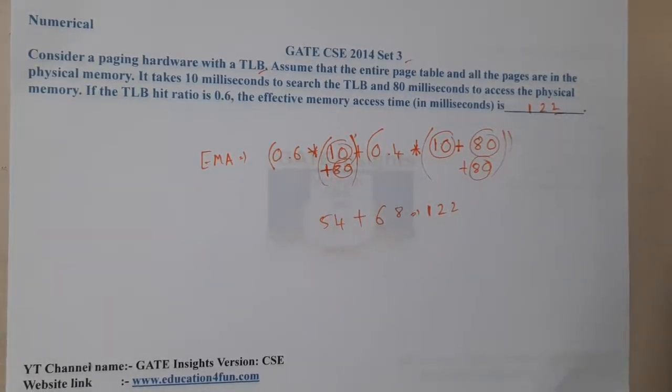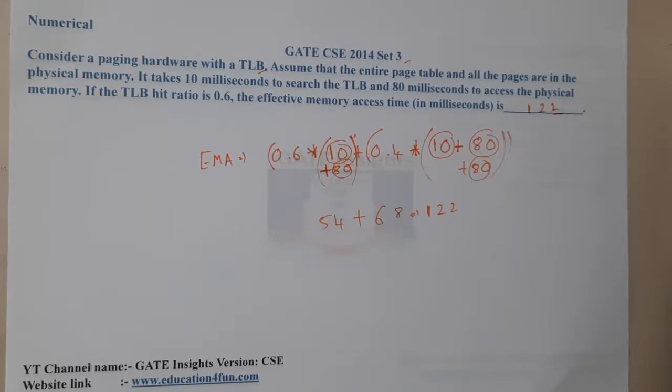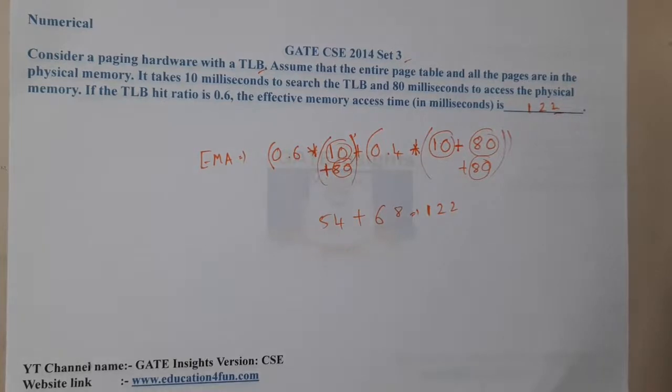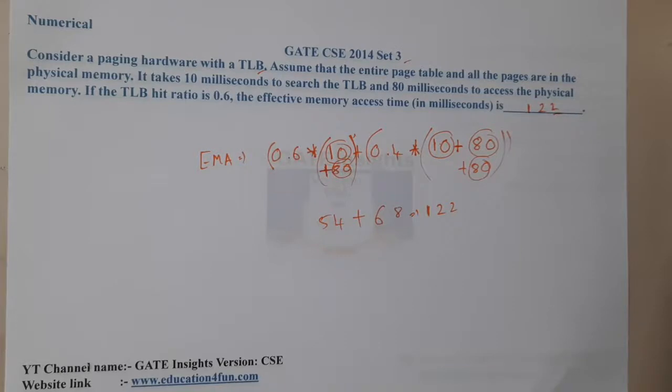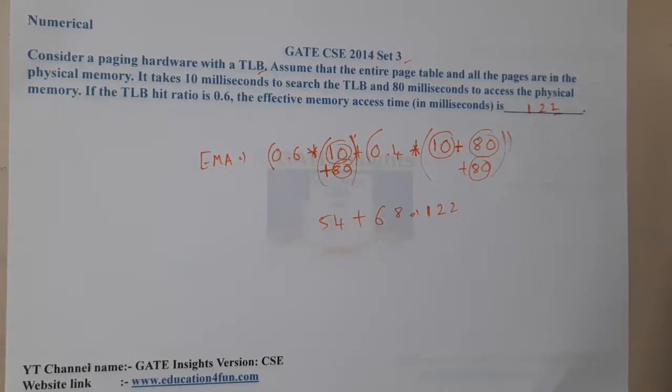Basically, whenever you got the address, you need to go to the memory to get that particular data. That is the reason why 90 is the minimum access time if it is a hit, and if it is a miss, indirectly we are going to spend 10 plus 180 and additionally 80 milliseconds.